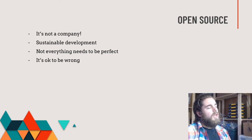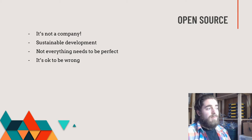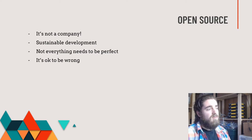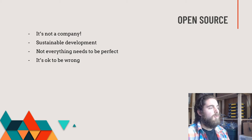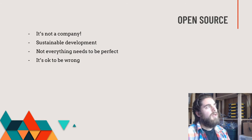Not everything needs to be perfect in an open source project. We don't necessarily need to hit the same deadlines, and if a feature isn't ready for one version, it can be pushed back to the next. When having discussions, it's okay to be wrong, okay for people to change their mind, and okay to go in different directions if something isn't working.